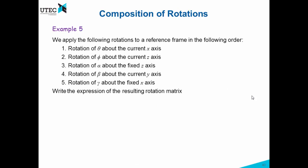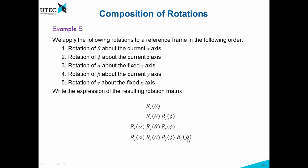As a final example, let's apply the following rotations and find the resulting rotation matrix. First, rotate theta about the current x axis — so we write Rx(θ). Then rotate phi about the current z axis; since it is current, it is a post-multiplication, so we append Rz(φ) on the right. Then rotate alpha about the fixed z axis — so we pre-multiply everything with Rz(α). Then rotate beta about the current y axis — post-multiplication, appending Ry(β). Finally, rotate gamma about the fixed x axis — pre-multiplication, giving Rx(γ) on the far left. This gives the resulting rotation matrix.